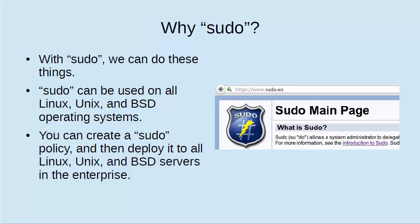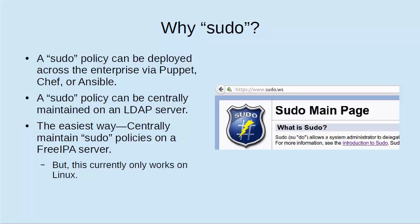As an added benefit, sudo can be used on Linux, Unix, and BSD operating systems. So if you are in a large enterprise with a mixed environment of different types of Unix servers, BSD servers, and Linux servers, you can create a sudo policy on one machine and deploy that policy to all the other machines on the network. It doesn't even matter if you create the policy on a Linux machine and deploy it out to Unix and BSD servers — if you have the policies written correctly so that they're compatible with all those different operating systems, then it's going to work for you.